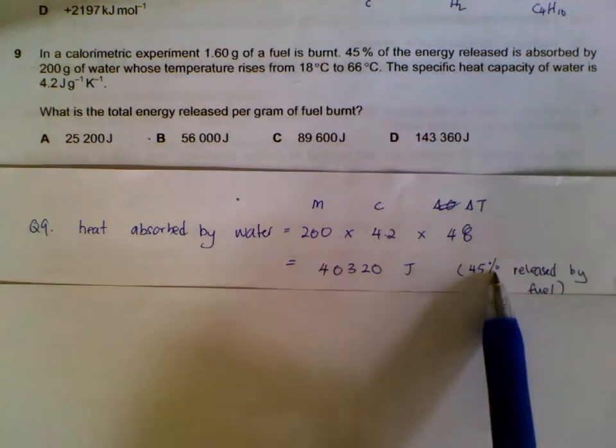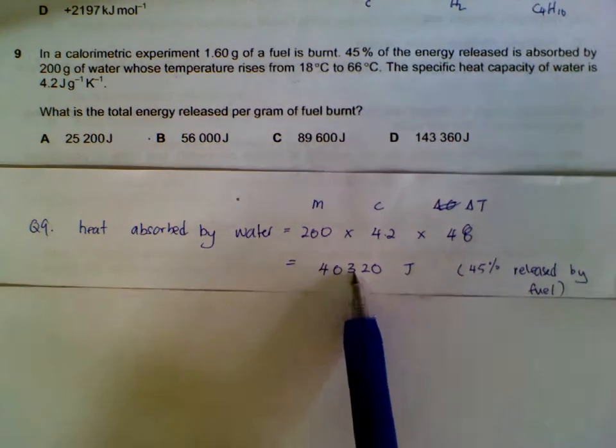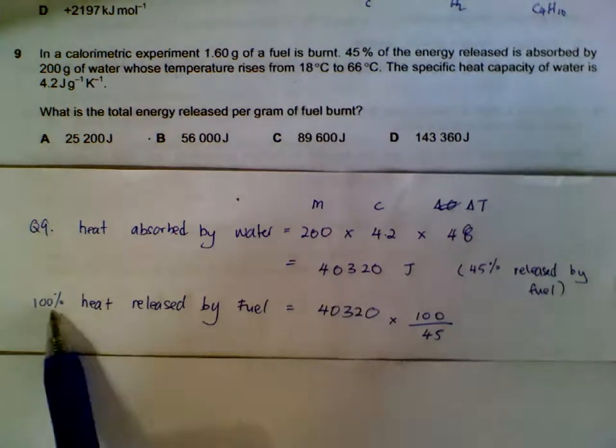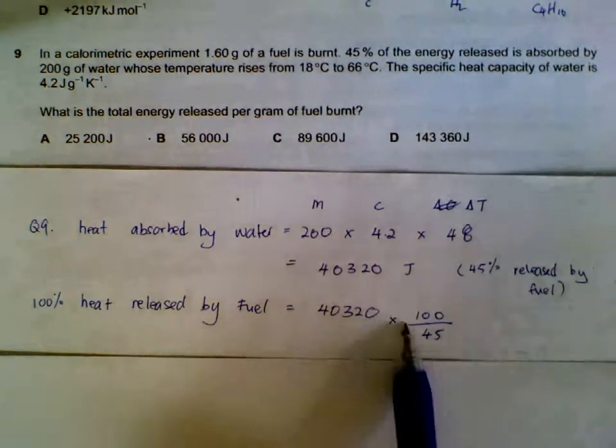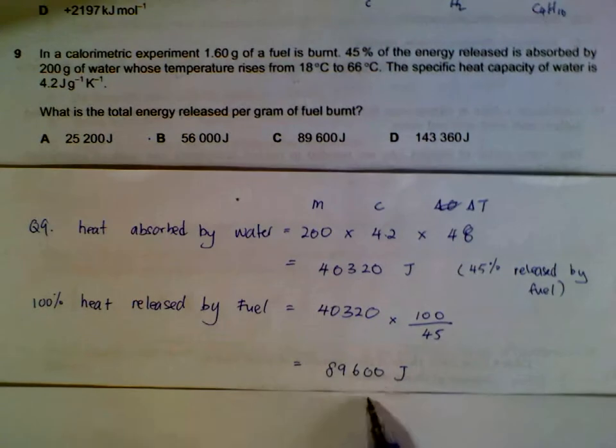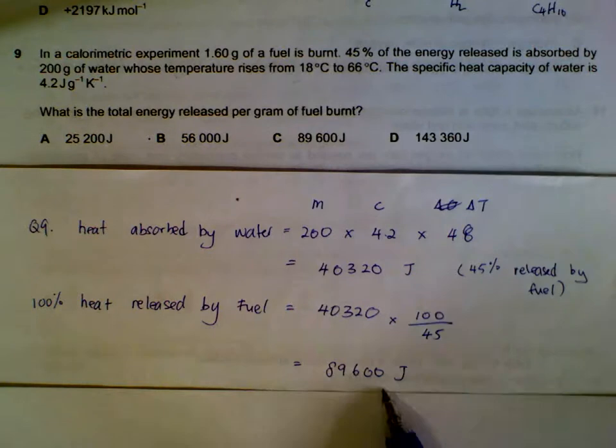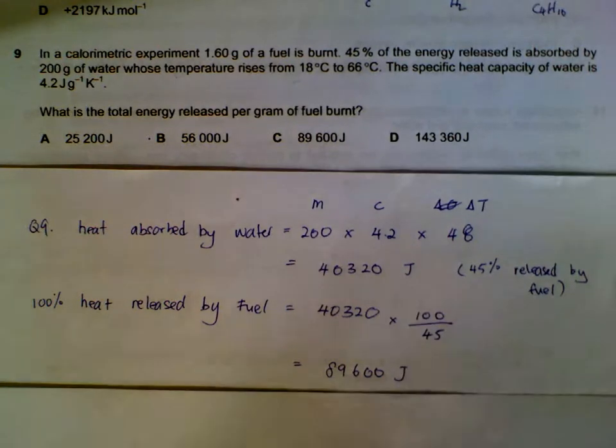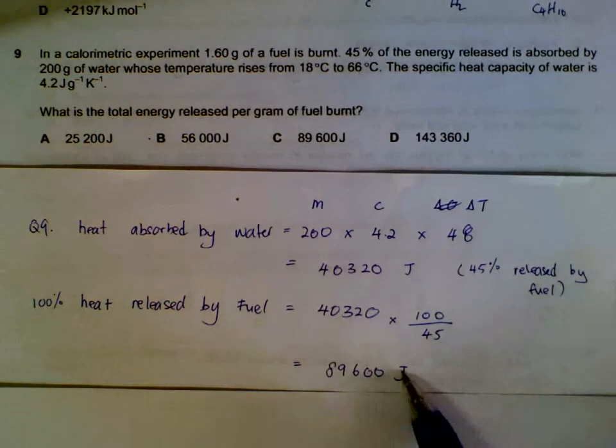We have to find out how much is actually released by fuel in total, 100%. So this is 45%. To find out 100%, we take this, divide by 45, multiply by 100. So this is the amount of energy released by the fuel in total. Of which, only 45% went to heat up the water. The rest could be lost to surroundings or heating the container.